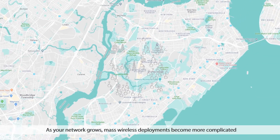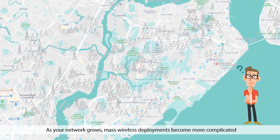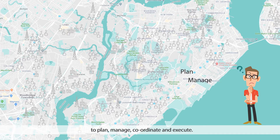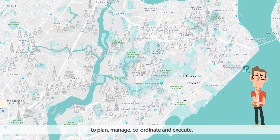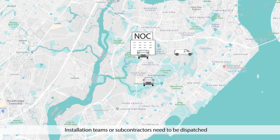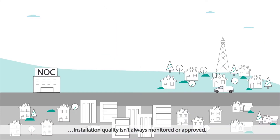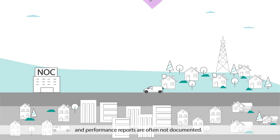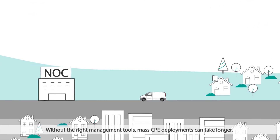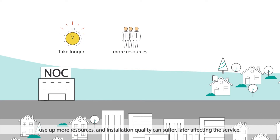As your network grows, mass wireless deployments become more complicated to plan, manage, coordinate and execute. Installation teams or subcontractors need to be dispatched with the right information to the different locations. Installation quality isn't always monitored or approved, and performance reports are often not documented. Without the right management tools, mass CPE deployments can take longer, use up more resources, and installation quality can suffer, later affecting the service.